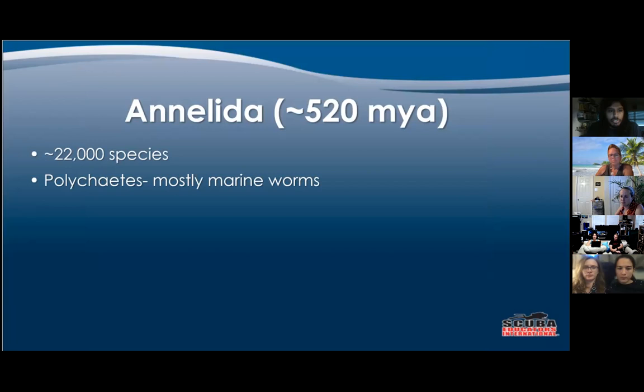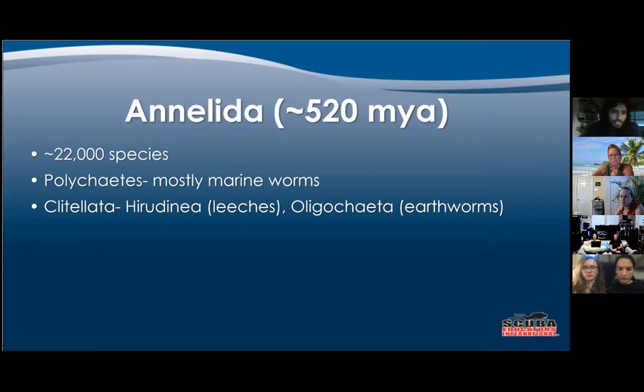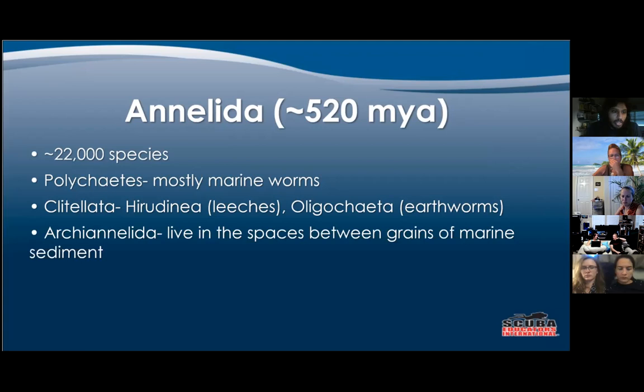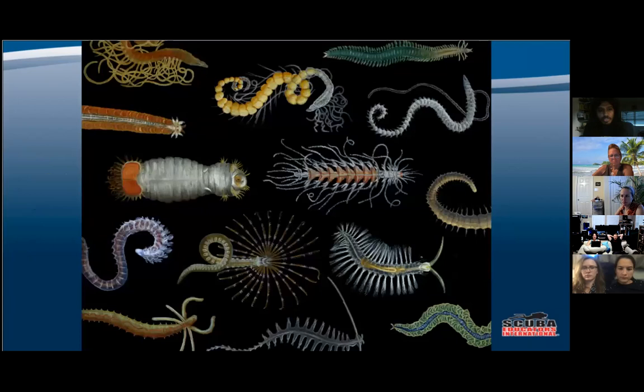Next we have Annelida — 22,000 species. They have polychaetes, which are mostly marine worms, and then your Hirudinea or leeches, and your oligochaetes. Polychaetes means 'many hairs' and oligochaetes means 'few hairs.' They live between the grains of marine sediment and are pretty recently discovered. As you can see, a lot of the marine worms are very hairy and have a lot of extra stuff hanging off of them.